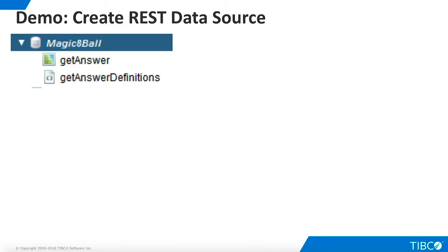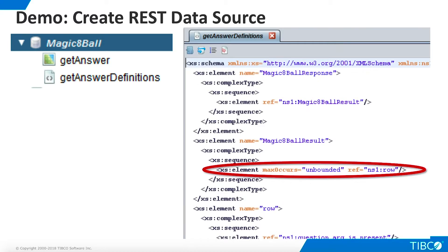As you can see, an XML schema definition file has automatically been created within our new REST data source. Note that our repeating group, row, includes the attribute maxOccurs equals unbounded. This will become very important later in the demo, because it helps the transformation editor understand that this is a repeating construct that can be included in a loop and transformed to a cursor. However, if your XML only returns one row of data, the Design by Example feature will not realize that a potential repeating group is present. If this happens, you can manually add the maxOccurs equals unbounded to the definition file. This will ensure that you can later transform the construct to a relational cursor. This is the case for the Magic8Ball application, so you must add the maxOccurs parameter, as shown here.